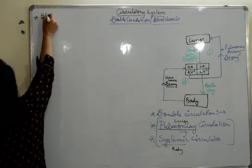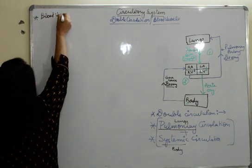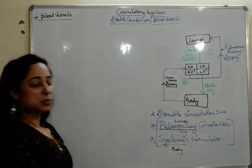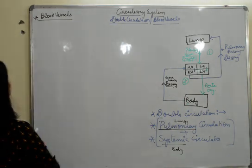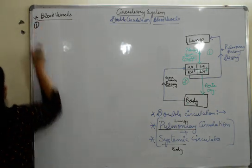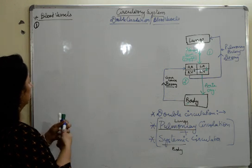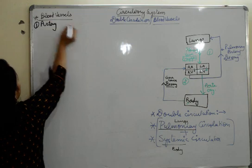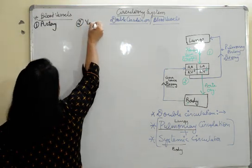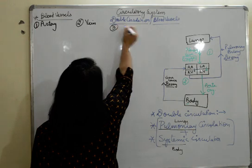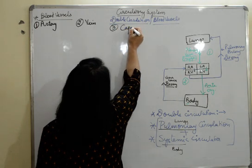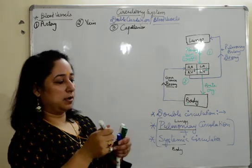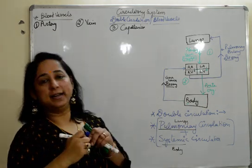Let's move to blood vessels now. Blood vessels. Very important. There are how many types of blood vessels? There are three types of blood vessels. One - artery. Two - vein. And three - capillary. So we have arteries, veins and capillaries.